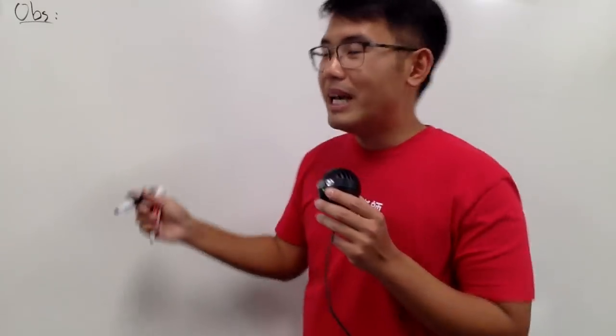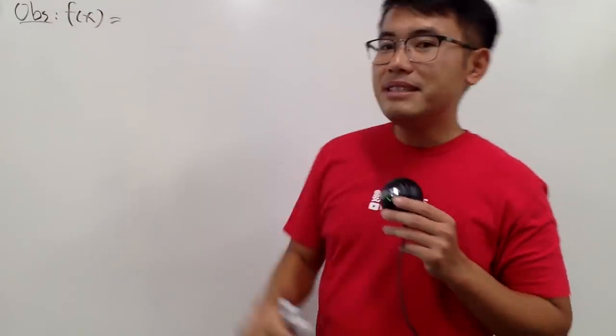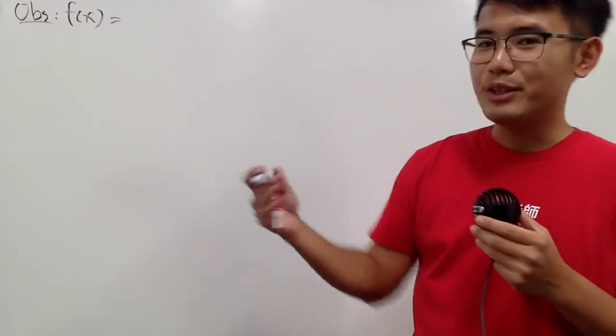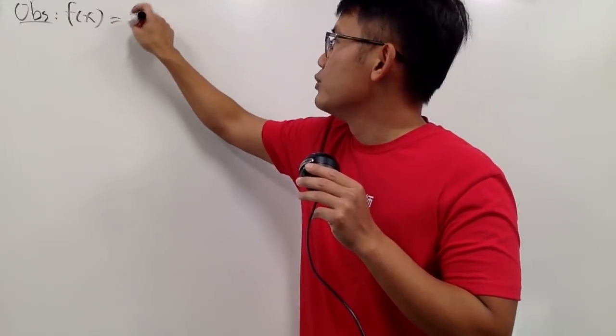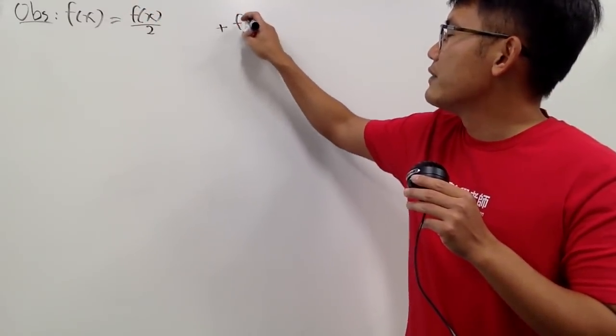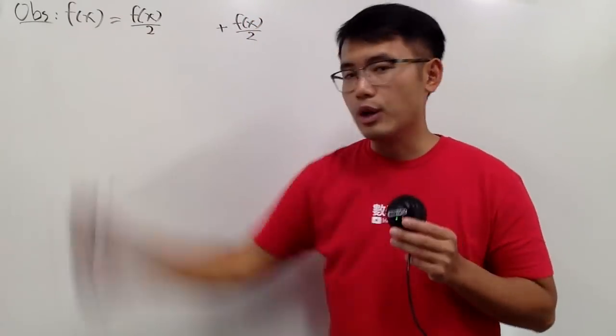I will call the function to be f as usual. Perhaps the easiest way to break a function down into two parts is to cut this into half and half. So let me write it as f over 2, and then we add it with f over 2. When you combine them, you get the original back.